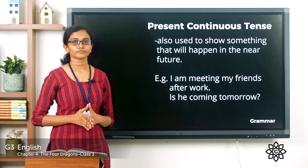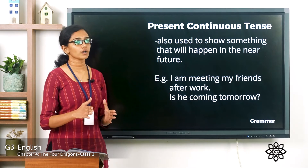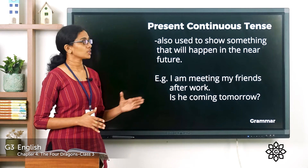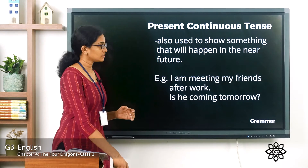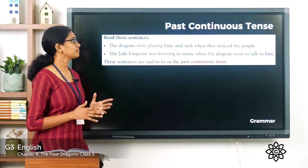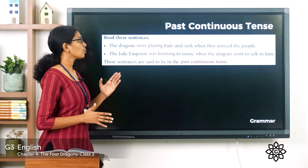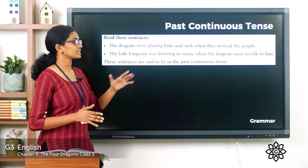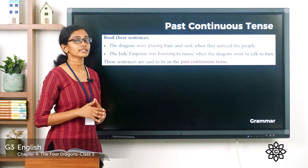'Is he coming tomorrow?' These are actions that will happen in the near future - not ongoing at the moment, but happening very soon. So the present continuous tense can be used in such cases as well. Now for the past continuous tense, look at the sentences: 'The dragons were playing hide and seek when they noticed the people' and 'The Jade Emperor was listening to music when the dragons went to talk to him.' These sentences are in the past continuous tense.